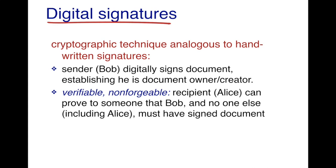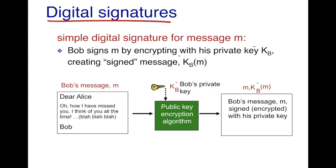Therefore the recipient, in this case Alice, can prove that this document was signed by Bob and nobody else. So how do digital signatures work? Bob takes the message M and encrypts it with his private key KB, and thus he has created a signed message. As Bob's private key is only known to Bob, this encrypted message can only be created by Bob. Then Bob sends the plaintext message along with this encrypted message to Alice.